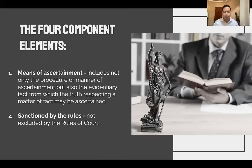There are four component elements of evidence. First, evidence as understood under the rules of court is a means or methodology of discovery of the truth. It is a means of ascertainment, meaning evidence is not the end in itself but a means to an end. And what is that end? The end or objective of evidence is to discover the truth.